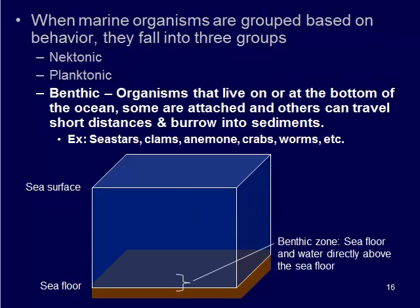The last type is benthic. These are organisms that live on or at the bottom of the ocean. Some are permanently attached and fixed; some can travel short distances — sea stars are a good example. Some burrow into sediments, like worms, and some types of clams burrow into loose sediments. Organisms that are fixed include sea anemones, rockweeds, and seaweeds. On our field trip we're going to be looking at the benthic zone primarily, because those organisms can't move when the tides go in and out — they're stuck — so we'll get to explore some of these different critters.